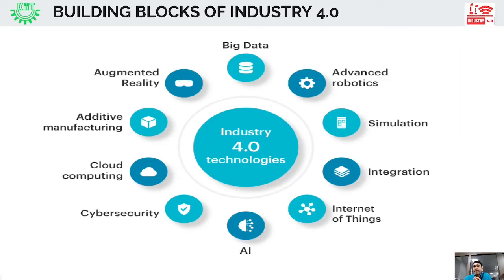Another important building block is advanced robotics. Advanced robotics involves the use of sophisticated robotic systems capable of performing complex tasks. These robots are often equipped with AI, computer vision, and sensor technologies to interact with the physical environment and collaborate with humans in industrial settings. Robotic systems perform tasks with precision and efficiency, while AI algorithms enable autonomous decision-making in real time, leading to improved productivity, reduced errors, and the ability to handle complex tasks.